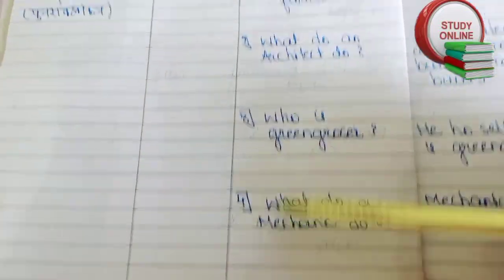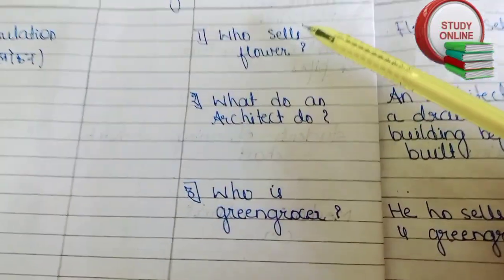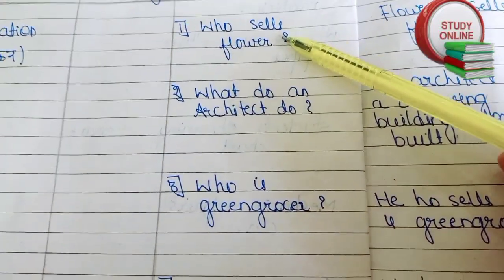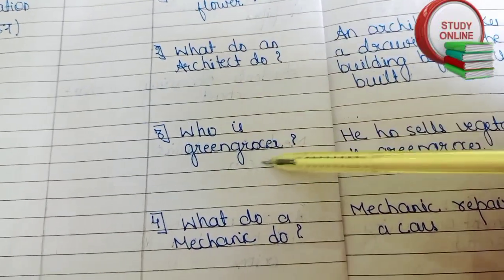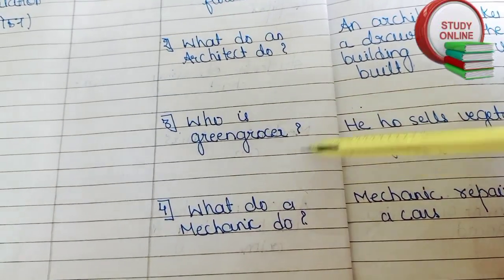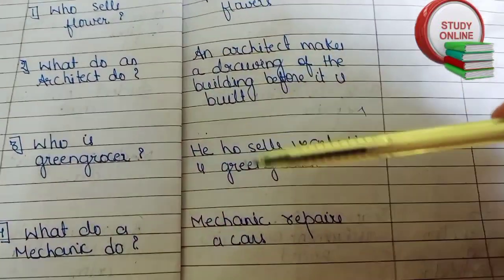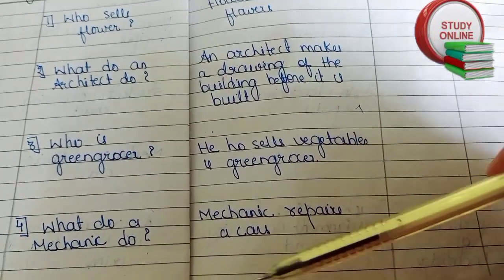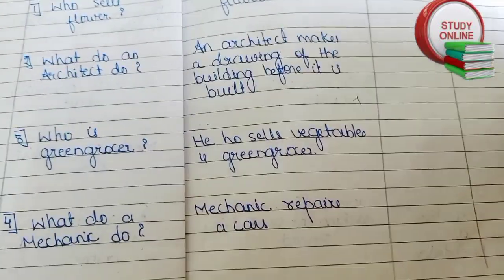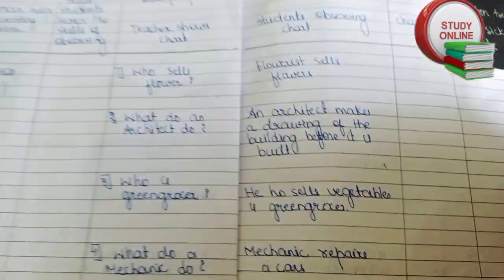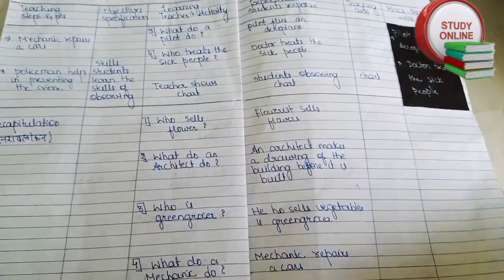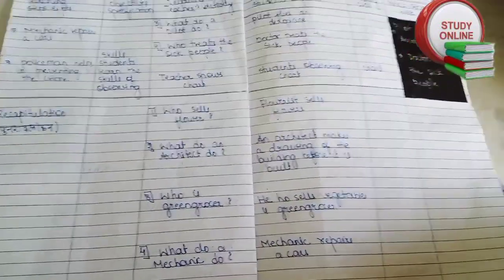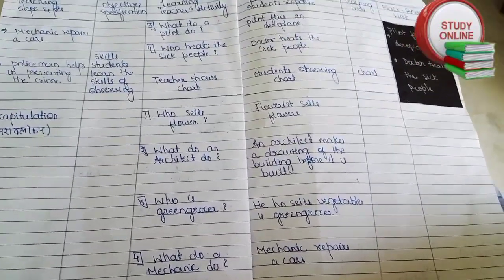For recapitulation, you can see four questions: who sells flowers? What does an architect do? Who is a greengrocer? What does a mechanic do? Here are the answers we expect from students. You can see the full page and take a screenshot.